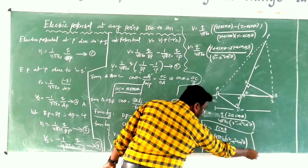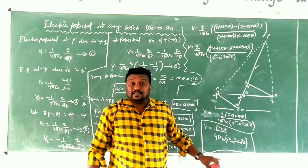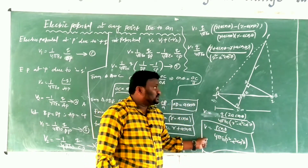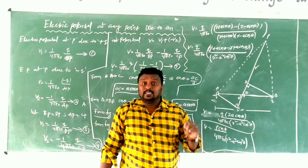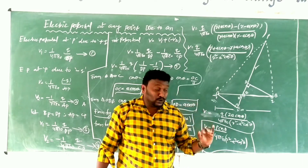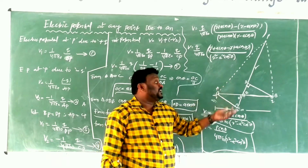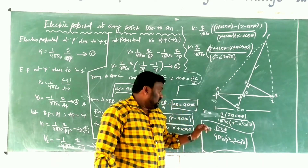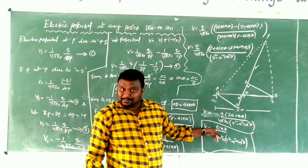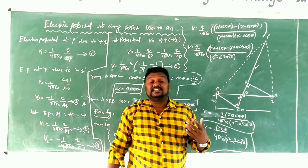The electric potential depends on the dipole moment P and the angle theta made by the position vector with the dipole. This is the expression for electric potential at a point due to an electric dipole.